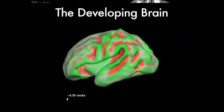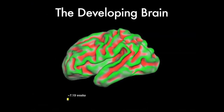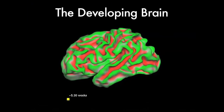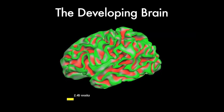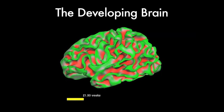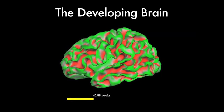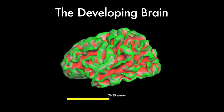Here we show how we can use the computer model to create a movie. We are just showing the folding and not the increase in brain size, so you can see the spatial orchestration of the folding with age.